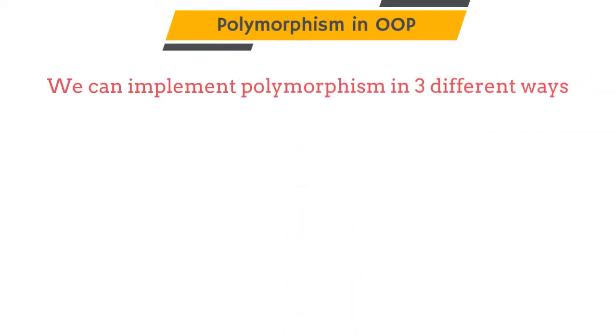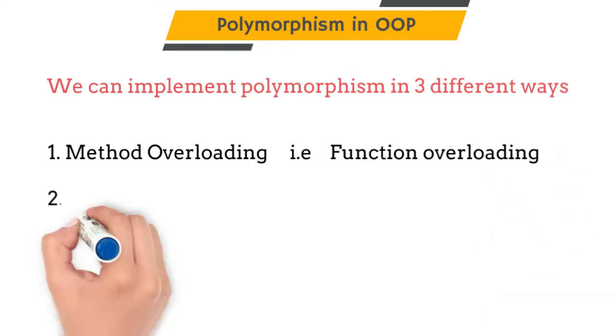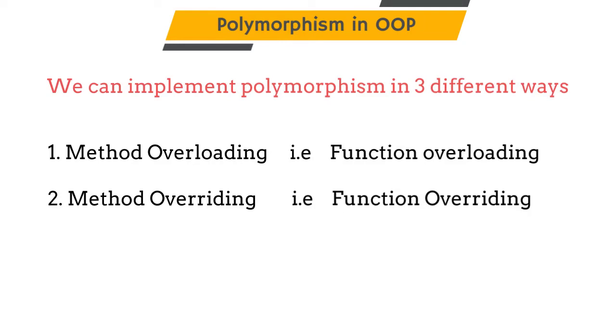Same concept we can use in object oriented programming. We can implement polymorphism in three different ways. First is method overloading, also called function overloading. Second is method overriding, also called function overriding. And third is operator overloading.